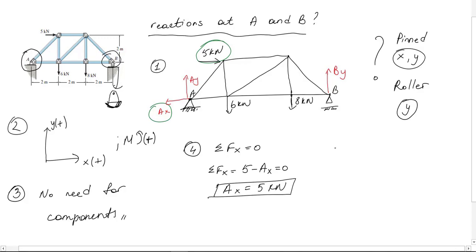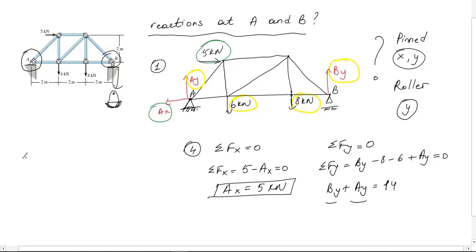For y we have four forces in total. From left to right: positive By, negative eight and six kilonewton, and Ay in positive direction. From this equation I get sum of By and Ay as 14 kilonewton. We have two unknowns but one equation. But I know that I can also write equilibrium equation for a moment at any point, thus I can decrease unknowns.